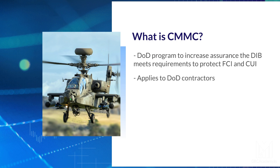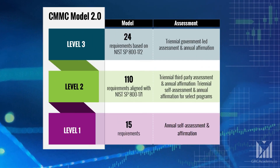CMMC only applies to DoD contractors. Contractors supporting other federal agencies are still accountable to NIST 800-171, but not DoD's CMMC. CMMC has three levels, and the level that is required will depend on the type of information the contract involves and the criticality of that contract. Let's look at the details of these levels.